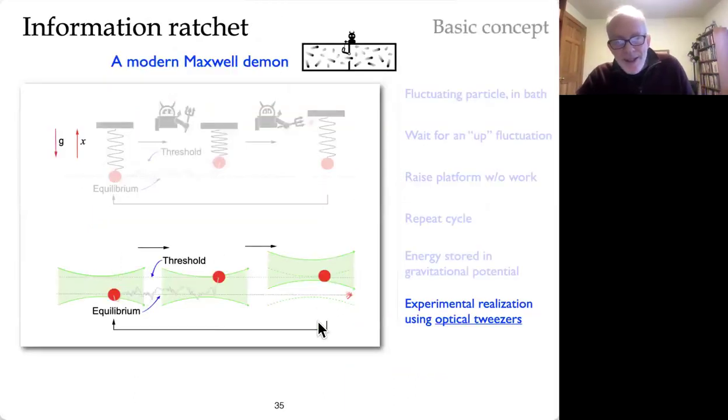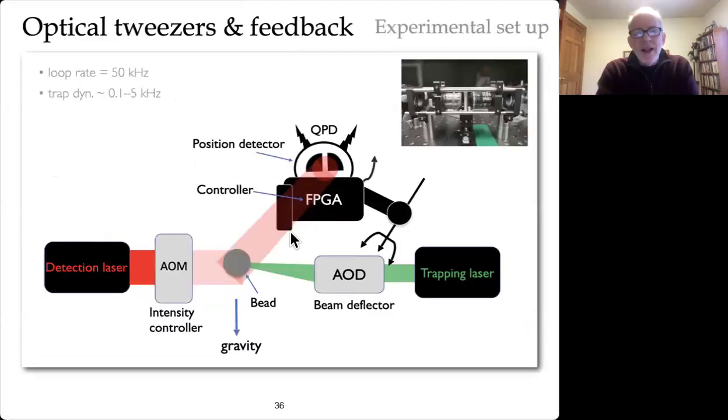But our realization of it involves optical tweezers. So we have a horizontal optical tweezers and heavy particles. So it sags a little bit in the beam. And so that's just this setting here. And then when the particle fluctuates up to the threshold, we're just moving the beam. So that's moving our support. Okay, so we really can kind of imitate these steps using optical tweezers. It's realized in relatively standard hardware. So this is just to convince you that there is hardware behind all of this stuff.